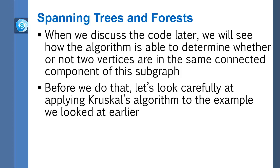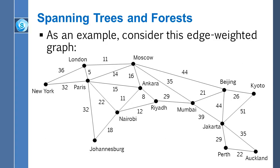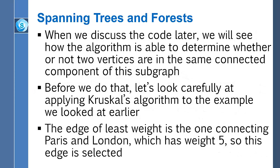Let's take a careful look at Kruskal's algorithm being used on our earlier example. To begin with, think about the subgraph that consists of all the vertices — all the cities — but none of the edges. We haven't selected any edges yet. The edge connecting Paris and London has the least weight at five, so we'll select that edge. Initially, Paris and London are in different connected components of the subgraph — all vertices are isolated — so there's no harm in selecting that edge.